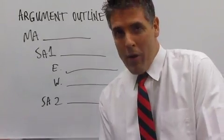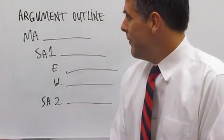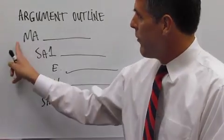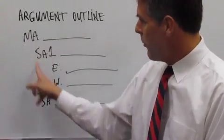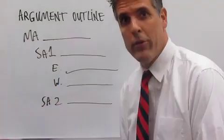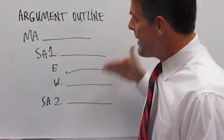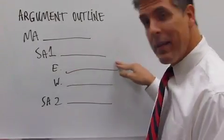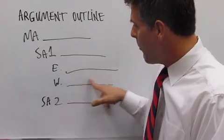This week we talked about argument writing. Here's your main argument; these two are your sub-arguments. You can have more than two, but this is the basic structure. E is your evidence, and W is the warrant—the reason why, explaining why the evidence proves sub-argument number one. Does that make sense?